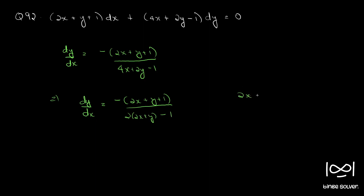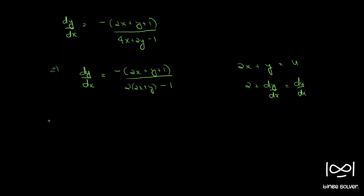So we use the substitution 2x + y = u. From this we get 2 + dy/dx = du/dx. Using that substitution, we get du/dx - 2 = minus (u + 1) divided by (2u - 1).